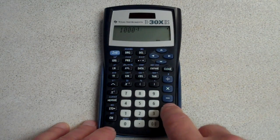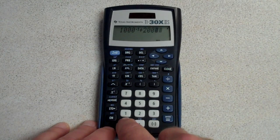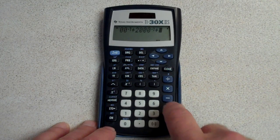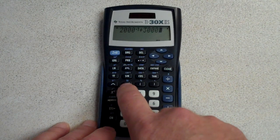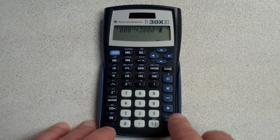So you're going to push reciprocal and you're going to push plus and you're going to enter 2,000 then you're going to push reciprocal and plus then you're going to enter 3,000 and you're going to push reciprocal and then you're going to push equals.